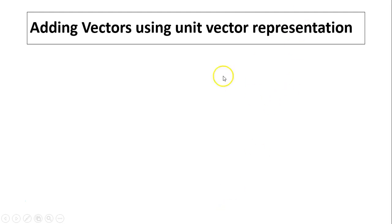Adding vectors using unit vector representation. Suppose you have vector a plus b. You want to find the resultant s. But in this case, a is in unit vector form and so is b. How do you add this? Remember, add vectors by components. We're doing the same thing.